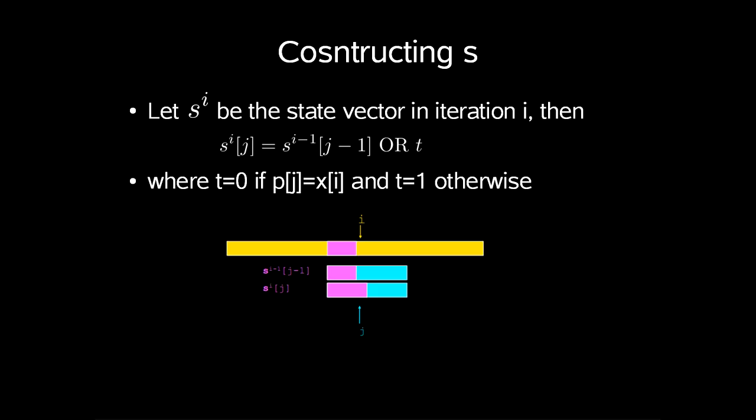Where t is 0 if and only if character at position j in p matches character in position i in x, and t is set to 1 otherwise.